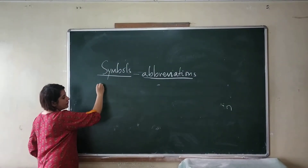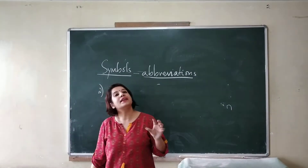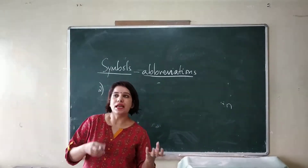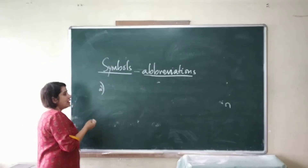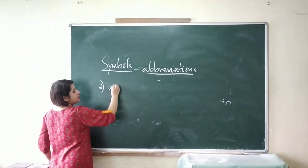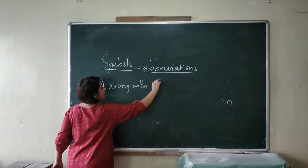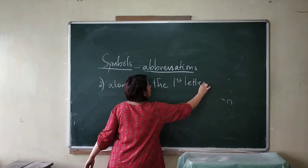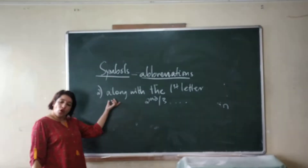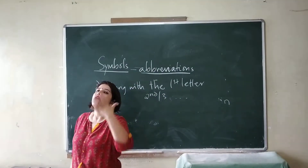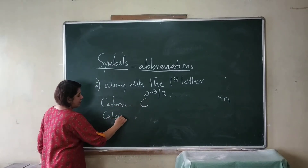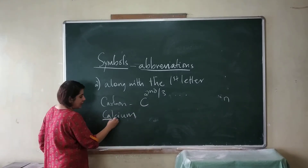The second rule: suppose carbon and calcium both begin with C. We cannot use capital C for both. So if more than one element has the same first letter, then along with the first letter we also use the second, third, or further letters. For example, carbon is C, and calcium uses the first and second letter: Ca.